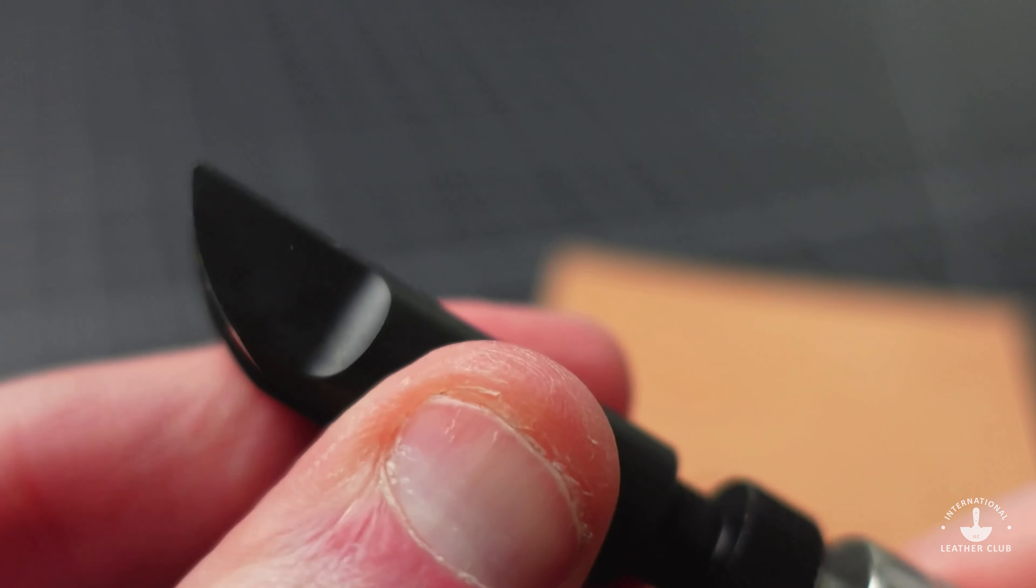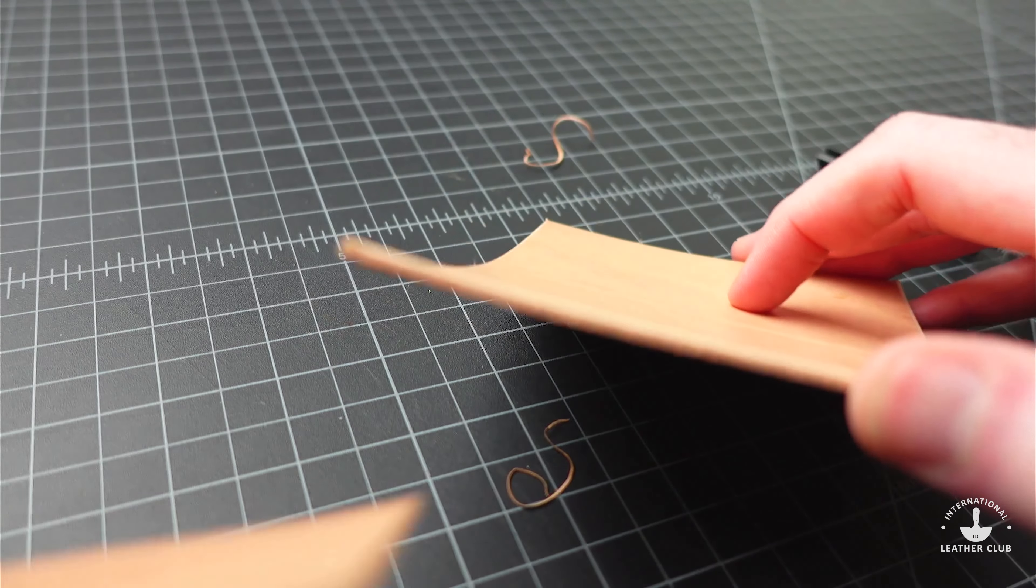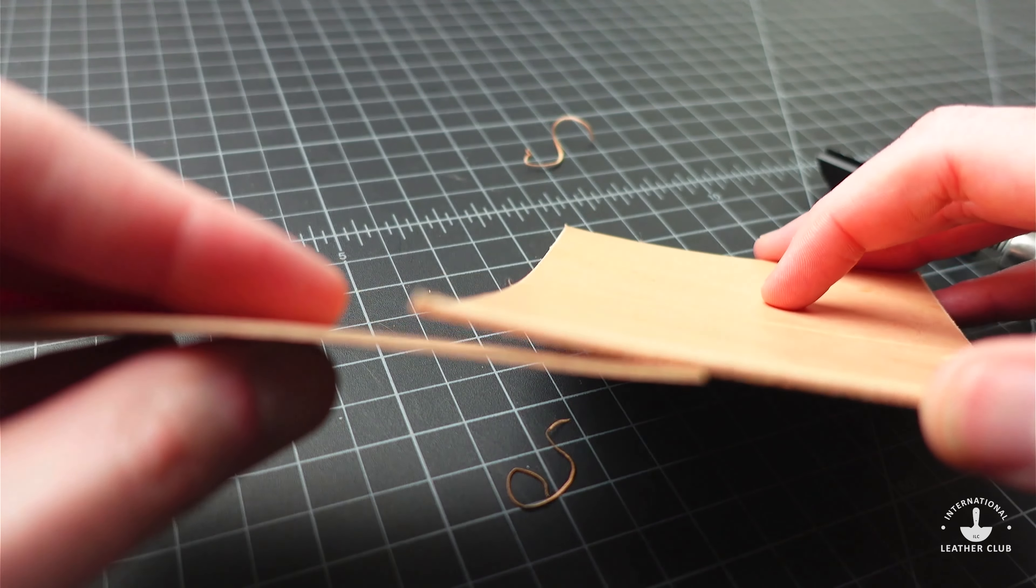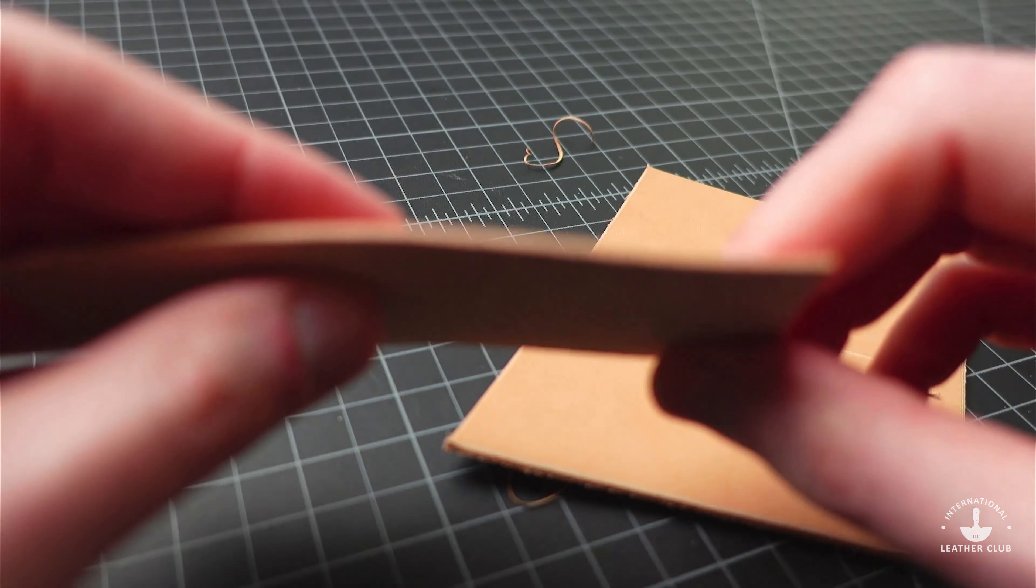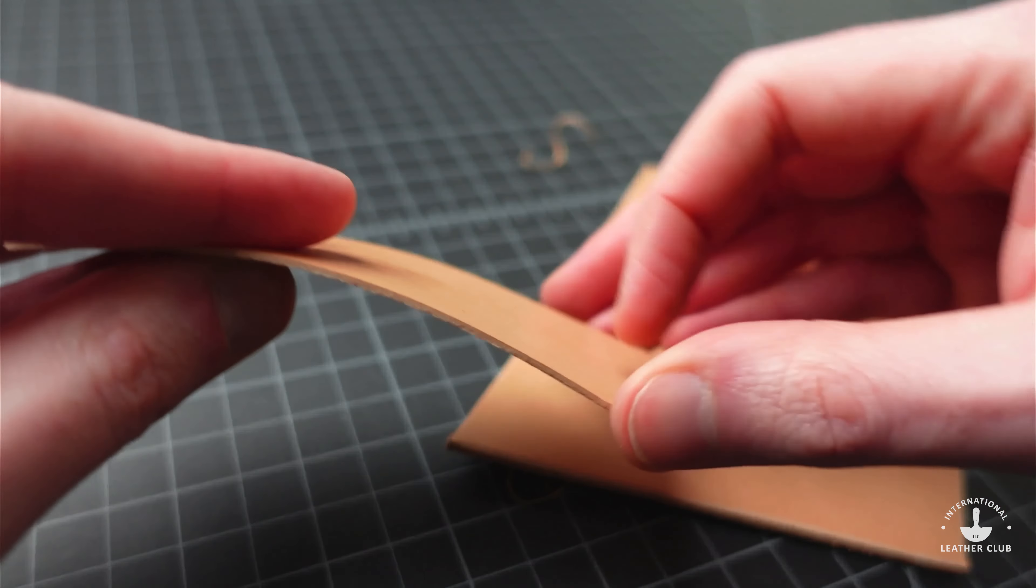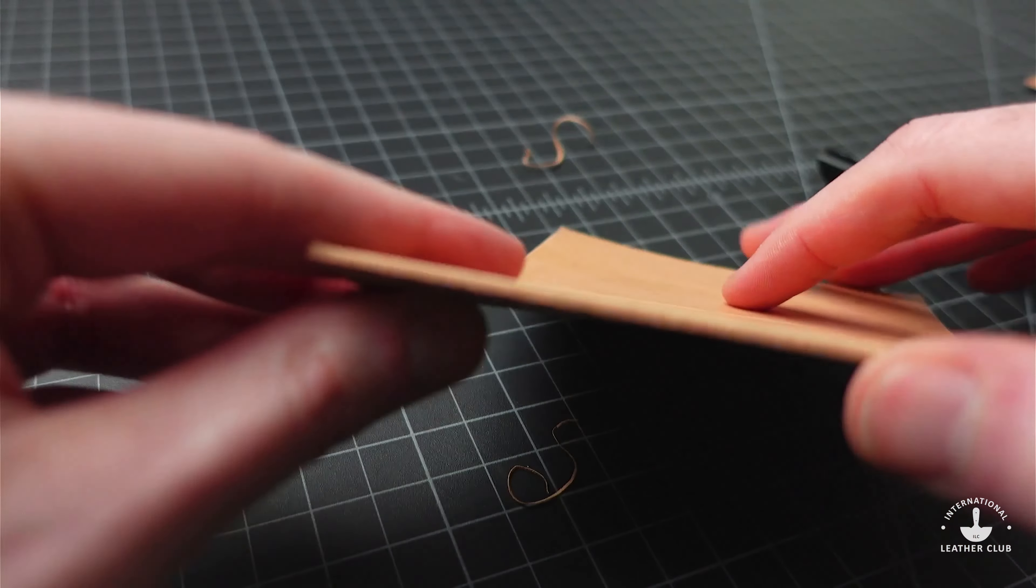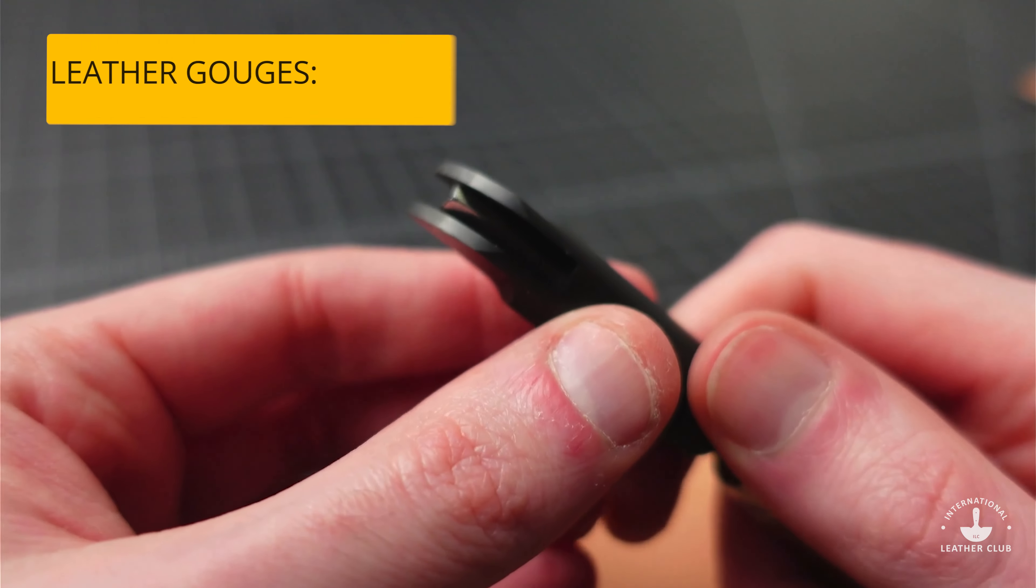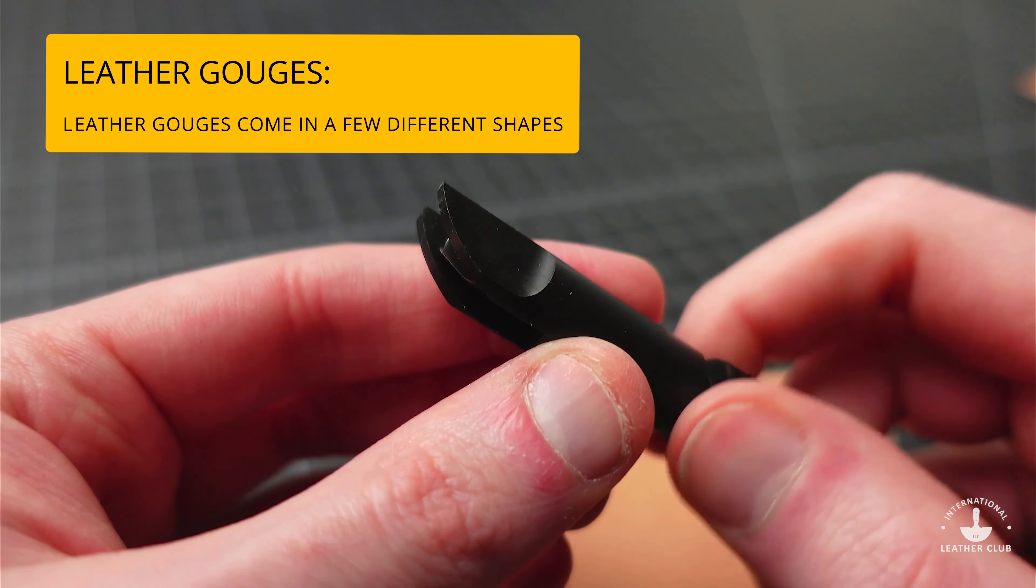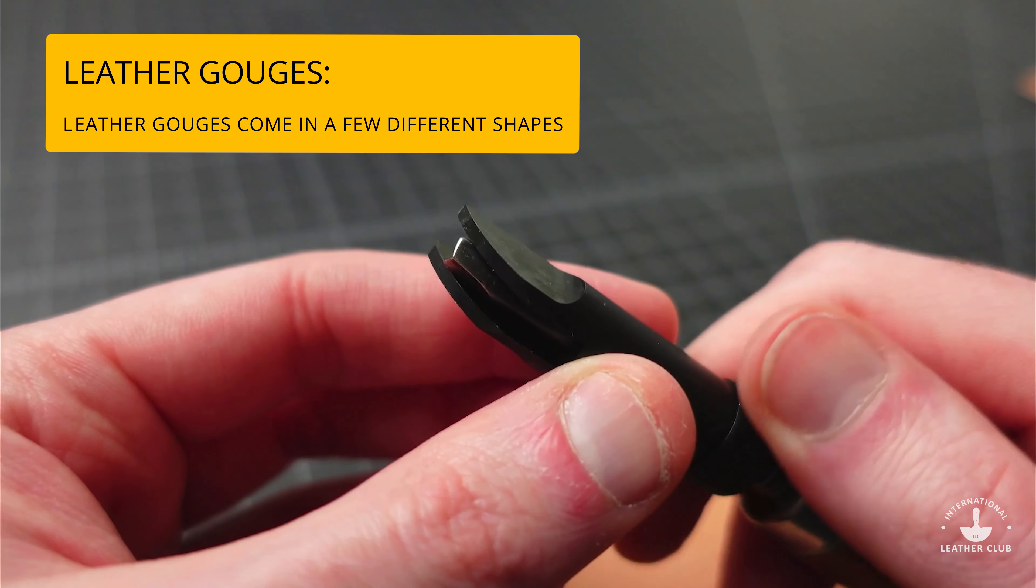So that way, if you're working with a thicker leather or a thinner leather, you can still use that to effectively put in those gouges. That's a way you can essentially use this tool to adjust based on the thickness of the material you are working with.